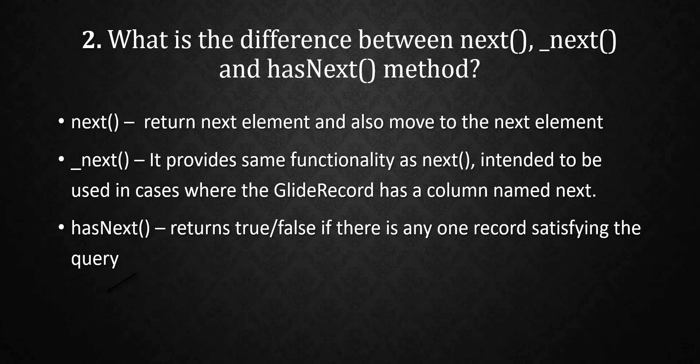The _next() method provides the same functionality as next(), but it is intended to be used in cases where the GlideRecord has a column named 'next'. For example, if you query the sys_template table in ServiceNow, that table has a field named 'next', so gr.next() won't work and you won't get any results — you need to use _next() instead.